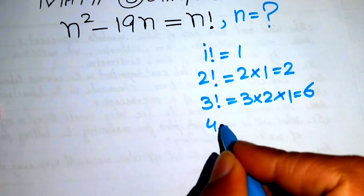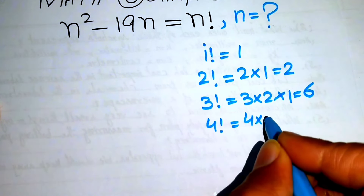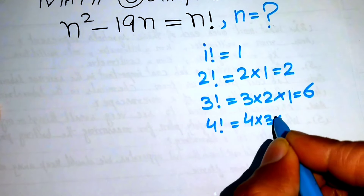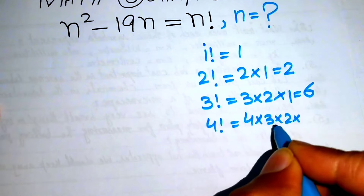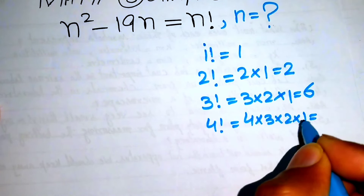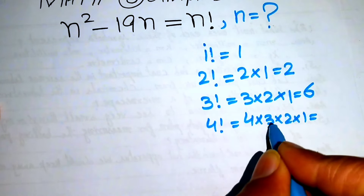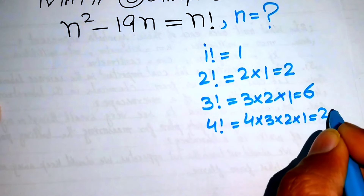If we have 4 factorial, we write it as 4 times 3 times 2 times 1. That gives us 4 times 3 equals 12, and 12 times 2 equals 24.